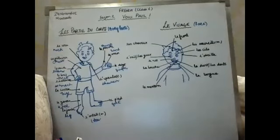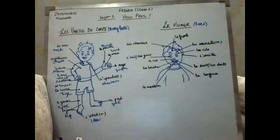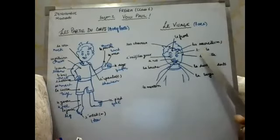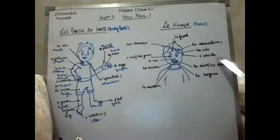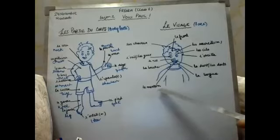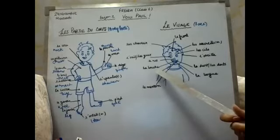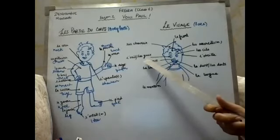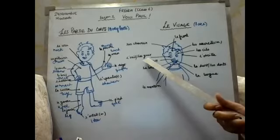So these all are your parti du corps. Now comes the face. Let us read: le front, les sourcils, les cils, oreilles, la dent ou les dents, la langue, le menton, la bouche, la nez, oreilles, et les yeux.